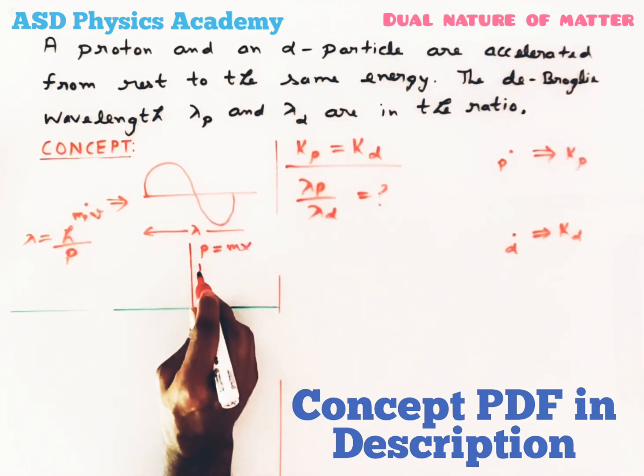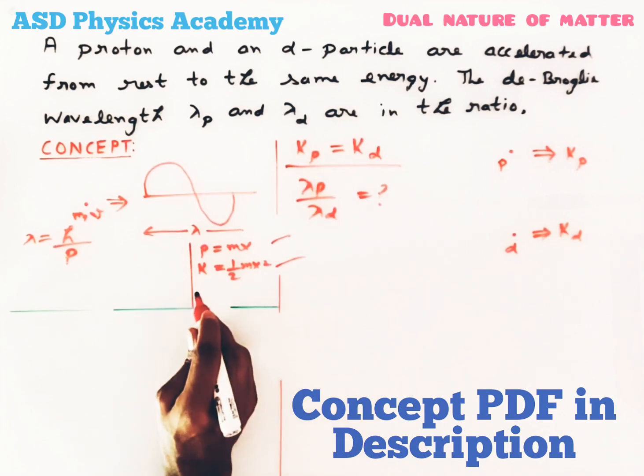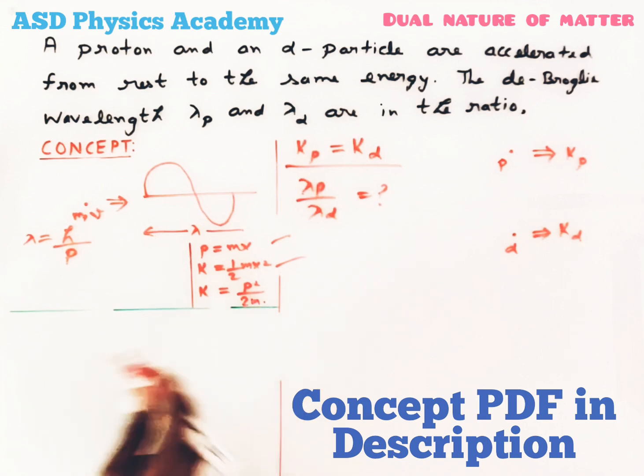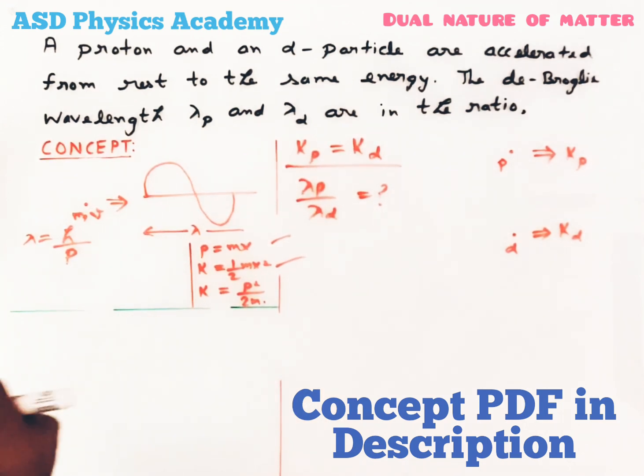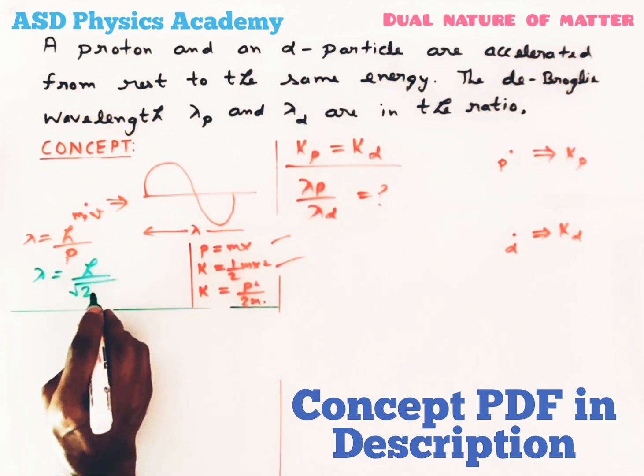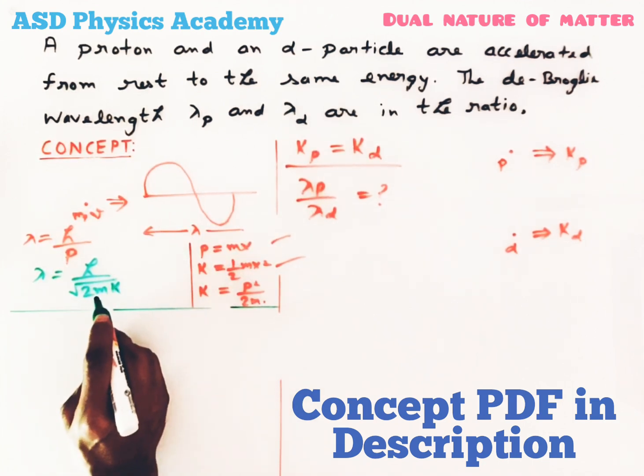Where p is the momentum given by p = mv. We know that kinetic energy is given by K = ½mv², so from these two expressions we can write K = p²/2m. Hence we can write λ = h/√(2mK).